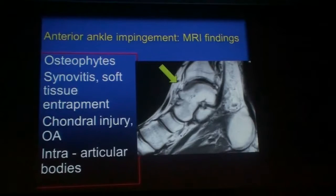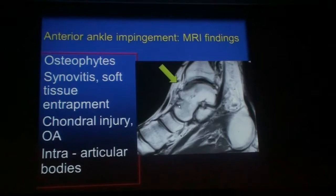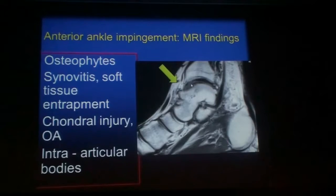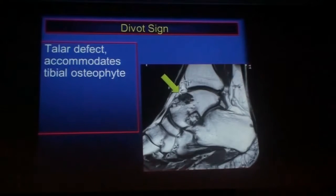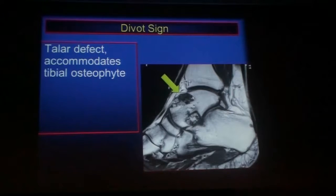On MRI, we may see the same findings as on radiographs — tibial osteophytes and talar osteophytes. Often they're not in the same plane when we look at them on sequential coronal images. But aside from the bony changes, we can also see synovitis and soft tissue impingement, cartilage lesions, intra-articular bodies, and eventually osteoarthritis. A lot of times what we see is what's called the 'dimple sign,' described in the arthroscopy literature — a talar defect which accommodates the tibial osteophyte. This is something we not infrequently see on MRI.